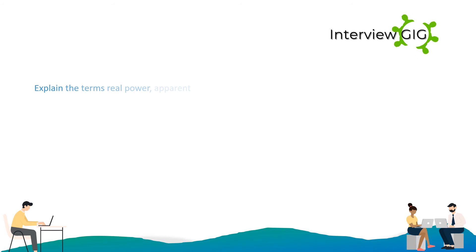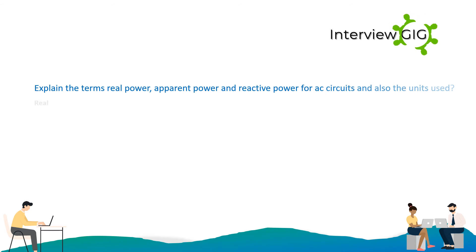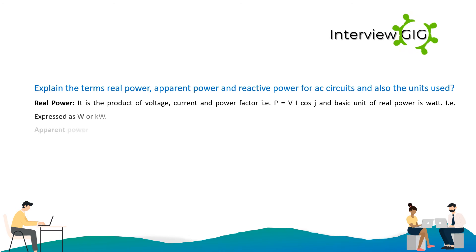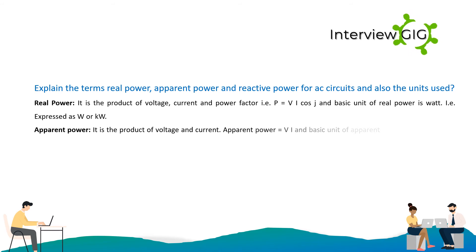Explain the terms real power, apparent power and reactive power for AC circuits and their units. Real power is the product of voltage, current and power factor — P = VI·cosθ — and the basic unit of real power is the Watt, expressed as W or kW.